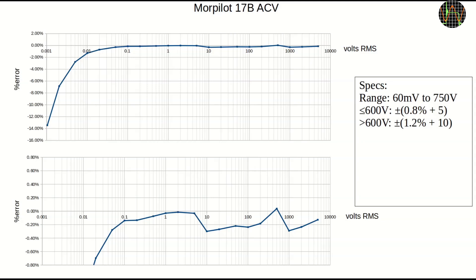Okay, moving on to ACV, which is always a bit worse than DCV because of the additional error caused by the AC to DC conversion. Of course, given the extra mV range, the Morpilot 17B handles low AC volts quite a bit better compared to the Grenova with its 6V lowest range.